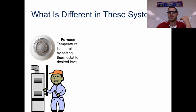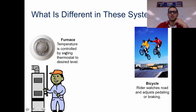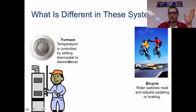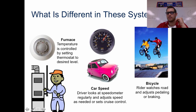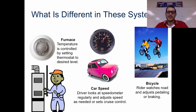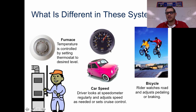Now let's talk about differences in these systems. A furnace — temperature is controlled by setting a thermostat at a desired level; a device senses the temperature and kicks on the heat or air conditioning depending on what you need. A bicycle — the rider watches the road and adjusts by pedaling or braking. You pedal faster, you go faster; you slam on your brakes, you slow down. For a car, the driver looks at the speedometer and decides whether they're going fast enough or too fast — and obviously some parents drive above 55.